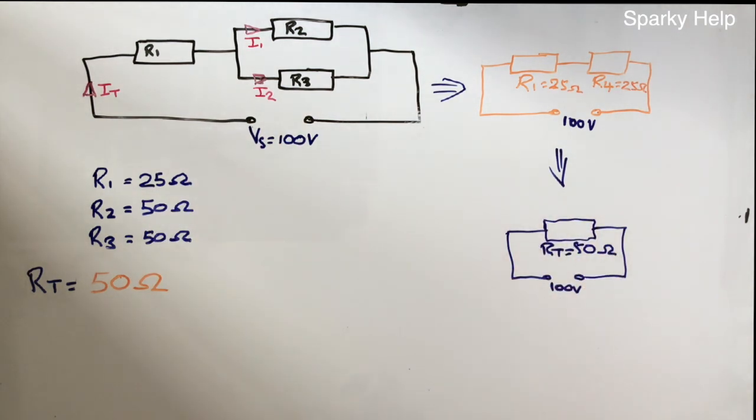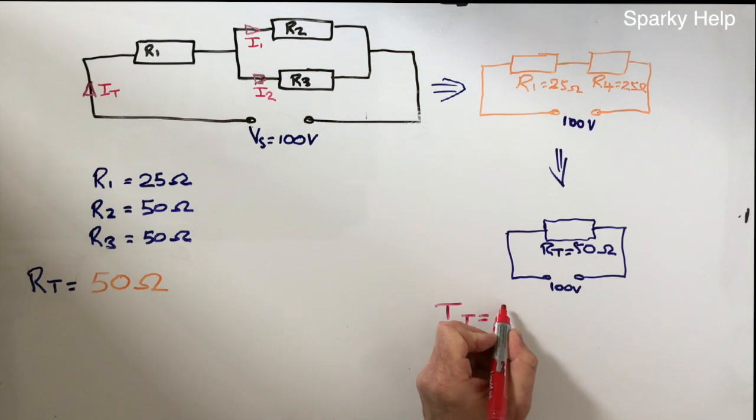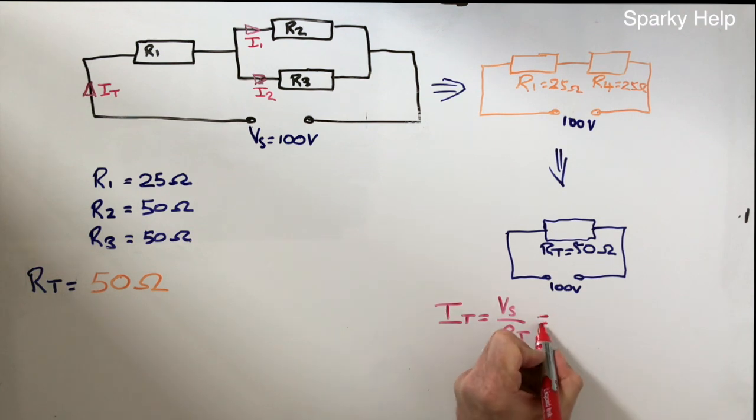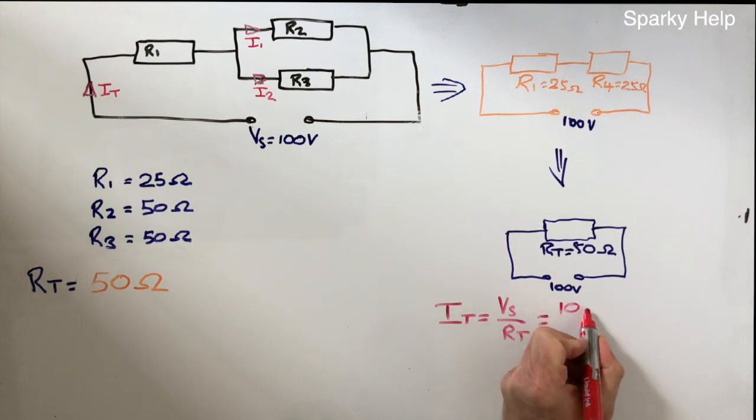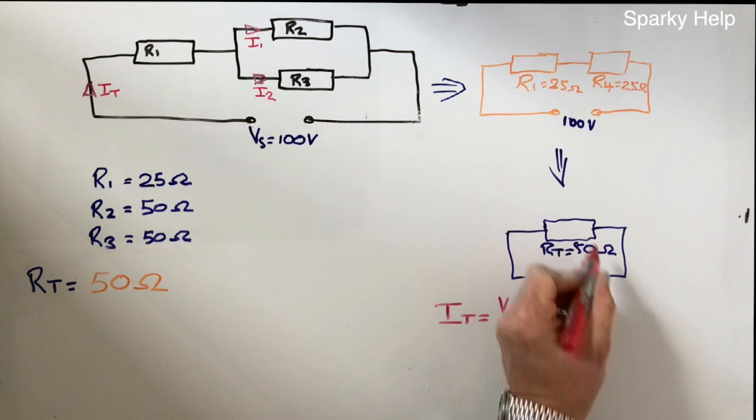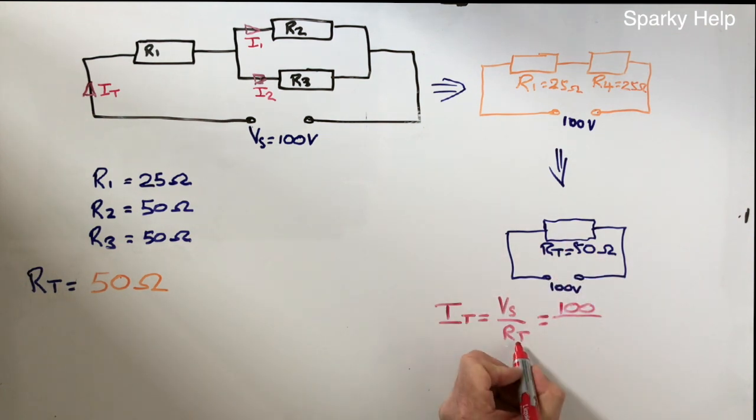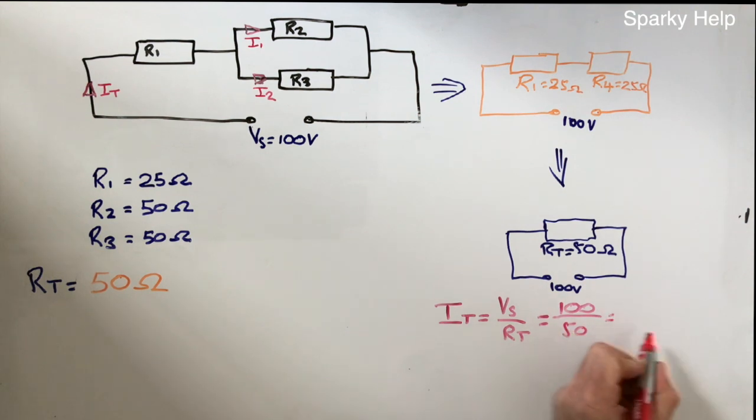Because this is the total of the circuit from previous examples, IT is equal to Vs divided by RT, which is Ohm's law. So if we put these figures in, 100, because this is the total, divided by RT, which is 50. Maths is not difficult, it's the principle we need to understand. 2 amps.